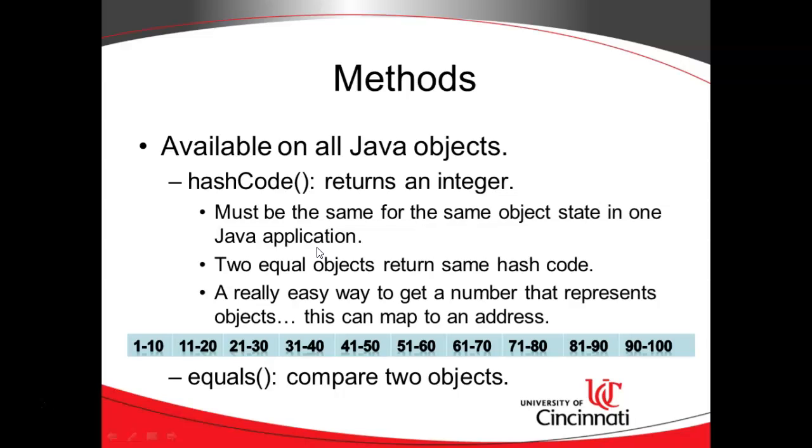Occasionally, you will have two different objects that generate the same hash code. In that case, the HashMap is going to step down and look at the equals method between the two to see if they're the same or not. That is an extra step, so it's a good idea to have this hash code return something relatively unique.